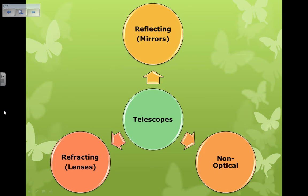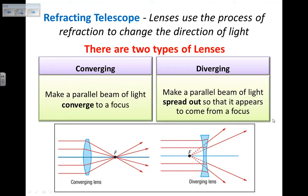So, telescopes. I can have different types: reflecting telescopes, which are made of mirrors; refracting telescopes, which use lenses; and non-optical telescopes. Today I'm going to the refracting telescopes — these ones use lenses, and the lenses use the process of refraction to change the direction of light. When a wave goes from one medium to another with a different density, the light is going to change direction and change speed. So light waves going through the air meet the lens, which is denser, and therefore the light slows down inside the lens, and either converges or diverges depending on the type of lens.